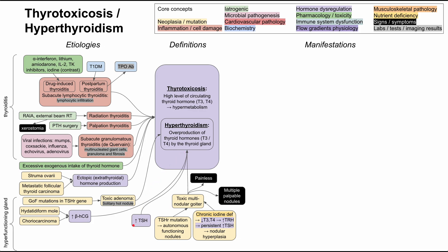Next are situations in which elevated TSH causes hyperthyroidism — these are examples of secondary hyperthyroidism. One example is pituitary thyrotropic adenoma, where an adenoma in the pituitary gland continually makes too much TSH, which then stimulates the thyroid. Another is Graves' disease, actually the most common cause of increased TSH, where an IgG autoantibody constantly activates the TSH receptor, which should also be detectable on blood work.